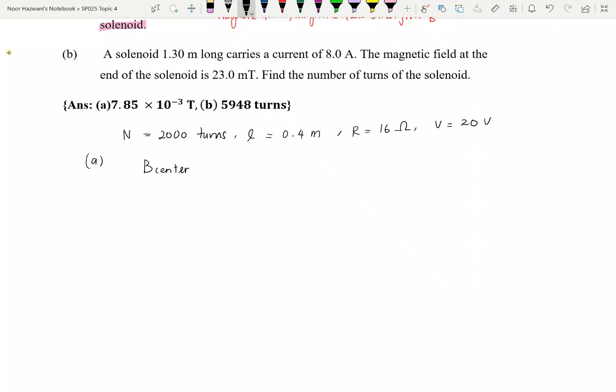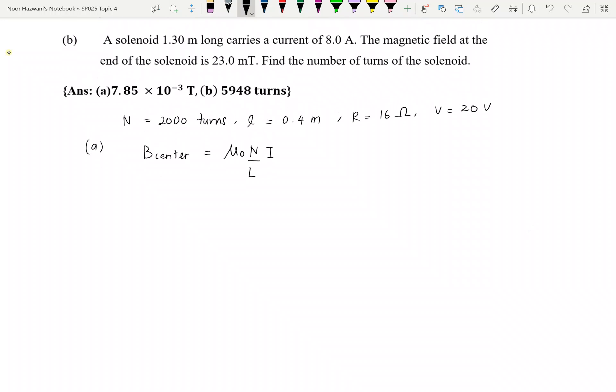Midpoint is equivalent dengan center which is the formula that adalah mu naught capital N over L and then you times dengan I which is current. So kita masukkan everything yang kita tahu. Mu naught is just constant, so the value is 4 pi times 10 power of negative 7. Number of turns is 2,000 given and then length dia adalah 0.4. But then the problem is we don't have the value for I.